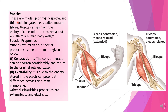Muscles are made up of highly specialized, thin, and elongated cells called muscle fibers. Muscle arises from the embryonic mesoderm. We are triploblastic, meaning we have developed from three germinal layers: ectoderm, mesoderm, and endoderm. So muscles are mesodermal in origin. They make up about 40 to 50 percent of the human body weight.